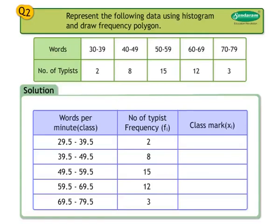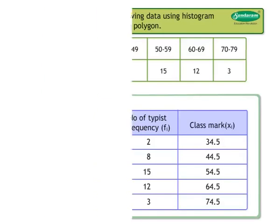To make the classes continuous, subtract 0.5 from the lower limit and add 0.5 to the upper limit. Derive the class mark by finding the average of the upper and lower limits. The first column gives classes, the second column gives frequencies, and the third column gives class marks.